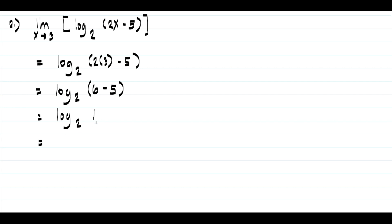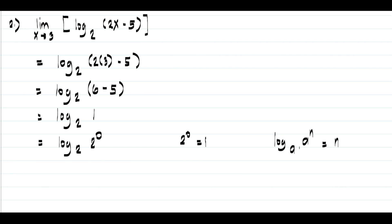Since we have 1, let us write 1 as 2 raised to 0, because 2 raised to 0 is 1, so we have log(2 raised to 0) to the base 2. Using the identity log(a^n) to the base a equals n, log(2 raised to 0) to the base 2 equals 0. So this will be our answer.